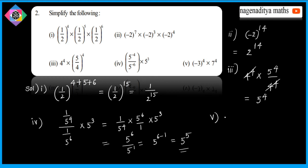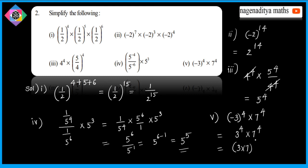Next problem: (-3)^4 × 7^4. The value equals 3^4 × 7^4. Using a^m × b^m = (ab)^m, this becomes (3 × 7)^4 = 21^4. It is a very simple problem.